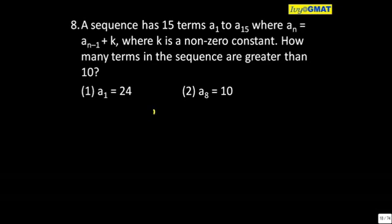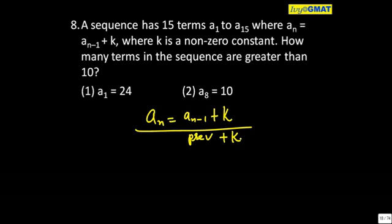Now let's see. I am given a_n = a_(n-1) + k. What kind of series is this? The previous term plus something equals the next term. Is this an arithmetic progression AP? Add something to the previous term, then I get the next term.